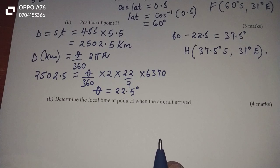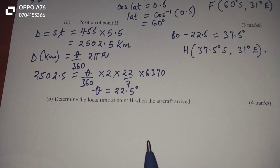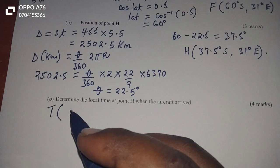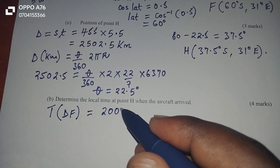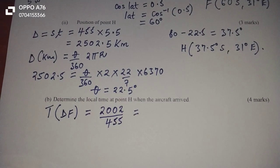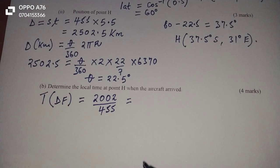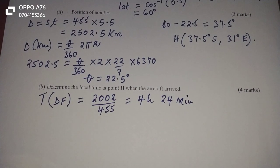Finally, we are told to determine the local time at point H when the aircraft arrived. We can calculate the time taken. The time from D to F: the distance is 2,002 kilometers divided by a speed of 455 kilometers per hour. The time we get here is equal to 4 hours 24 minutes.